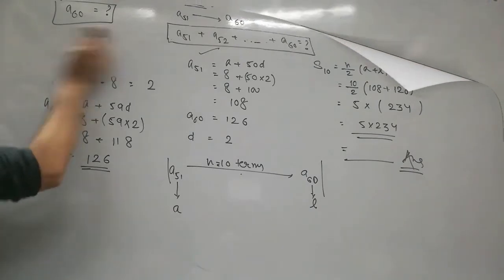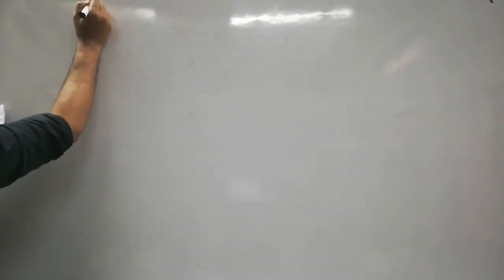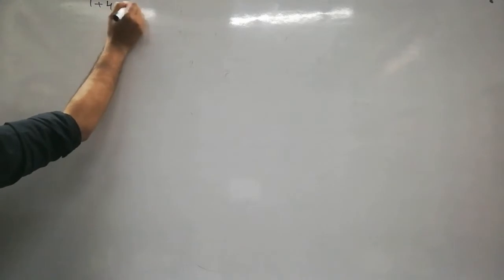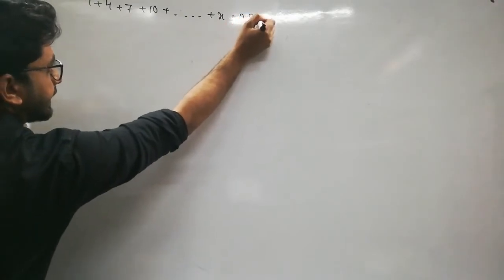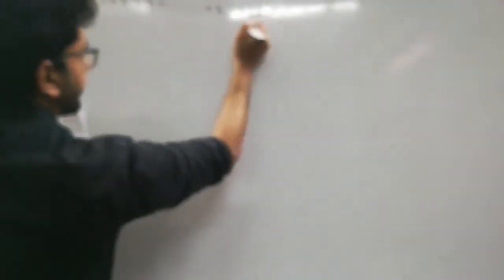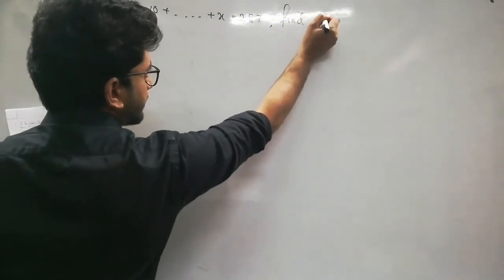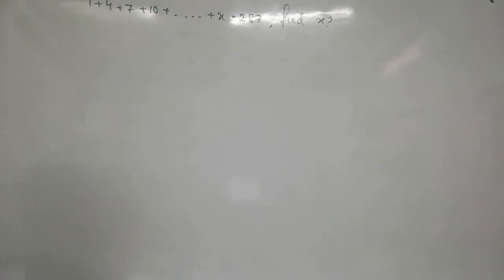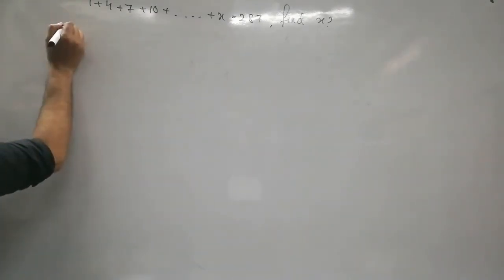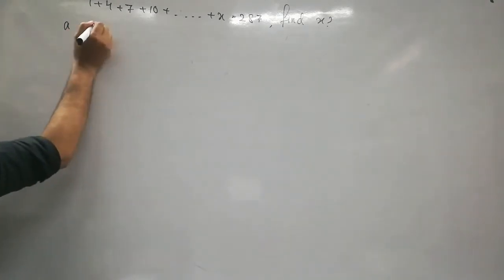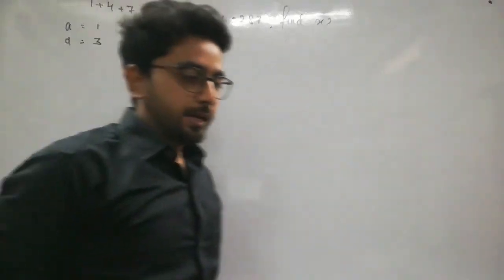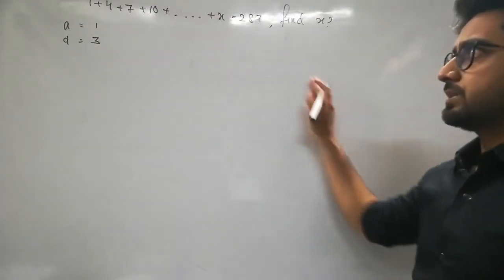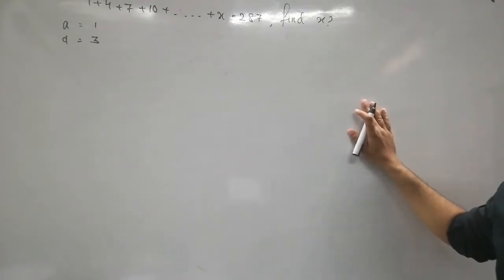Next question: If 1 + 4 + 7 + 10 + ... + x = 287, find x. This is a small but very tricky question. First, this is an AP because first term is 1 and common difference is 4 − 1 = 3. And x is the last term of this AP.